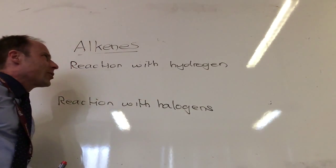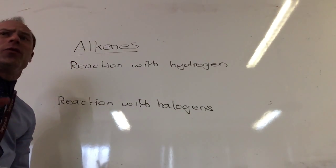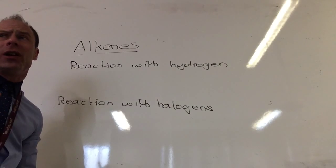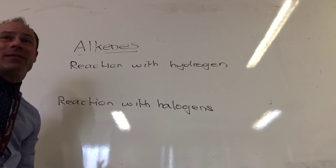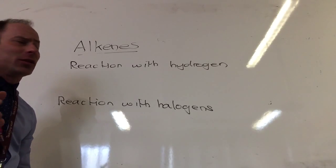So most of the reactions of the alkenes involve, well they all involve the double bond. We basically add molecules across the double bond.